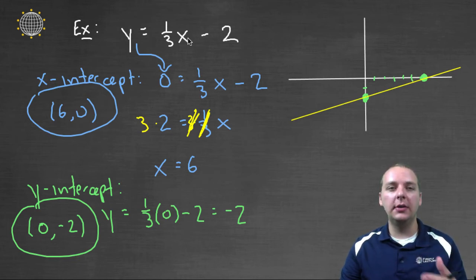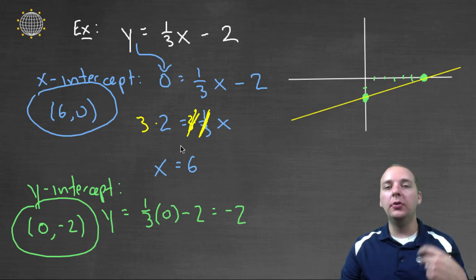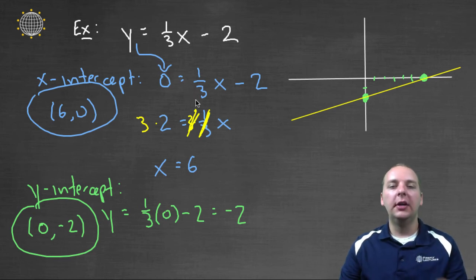You notice how much faster that was than using an x-y table. Now one thing that we forgot to do, was we found our intercepts, and we're pretty sure that's right, because the algebra wasn't too terrible. But who's to say I didn't make a small mistake with a plus or a minus? Let's just be on the safe side.